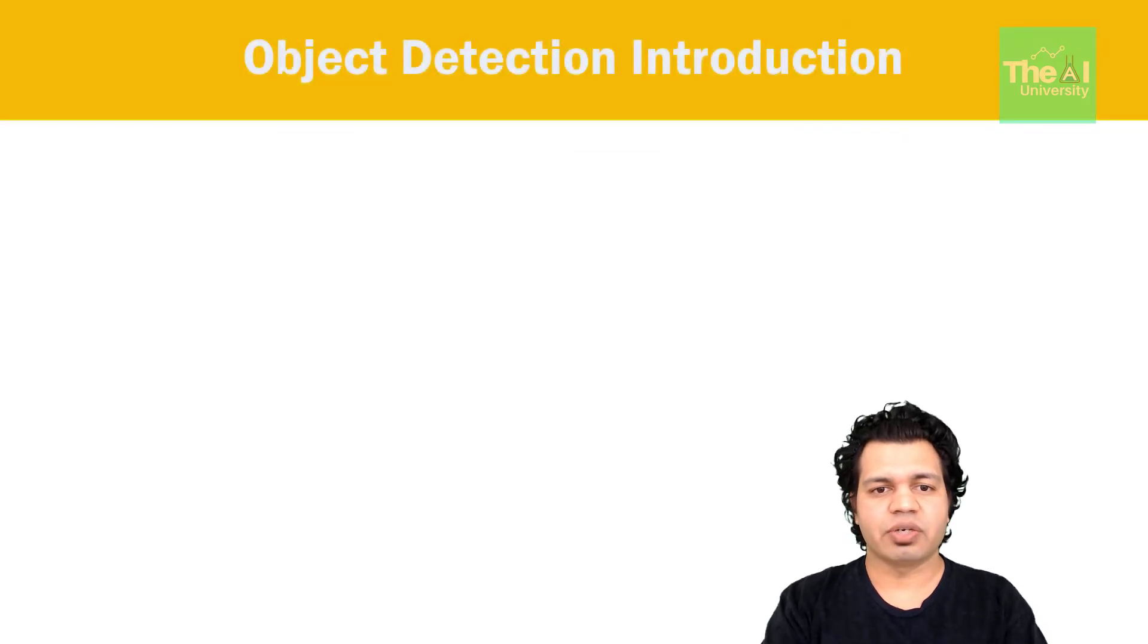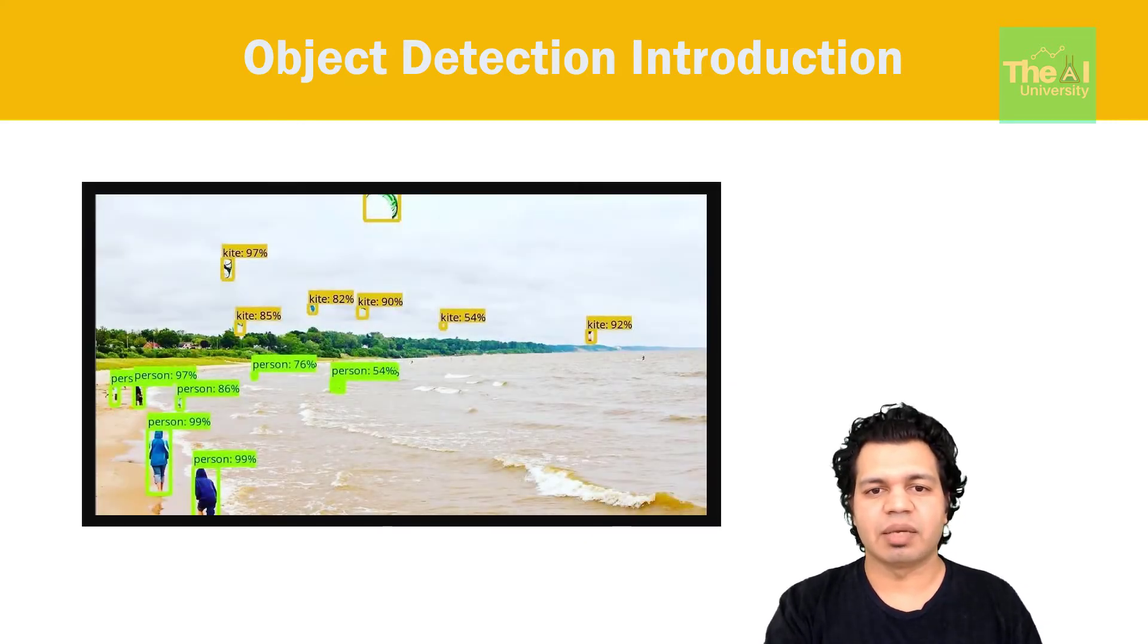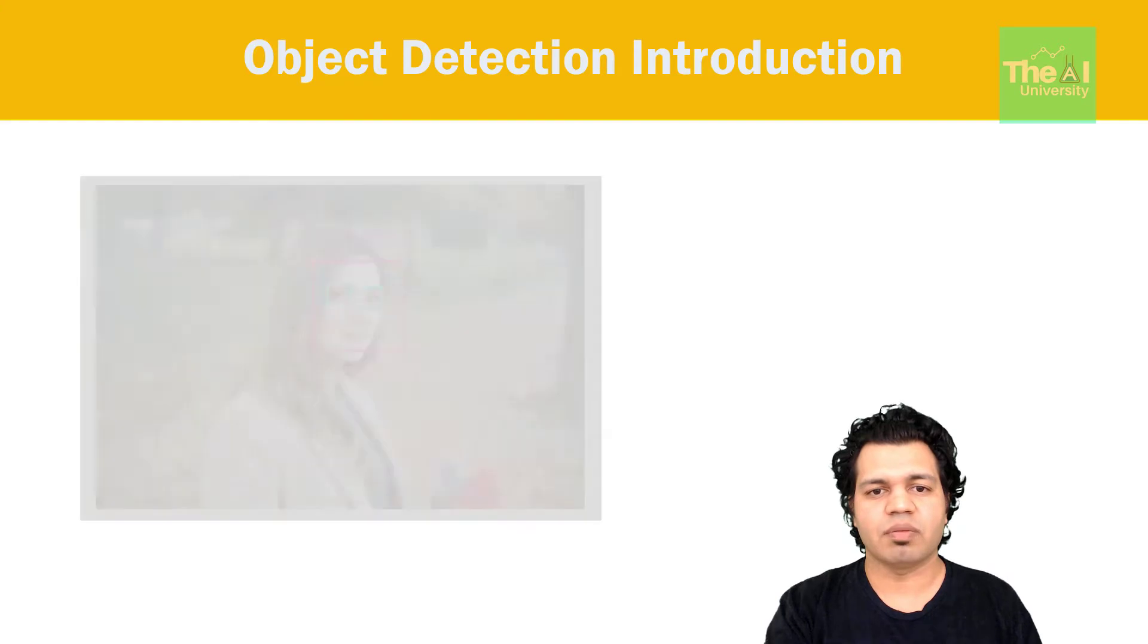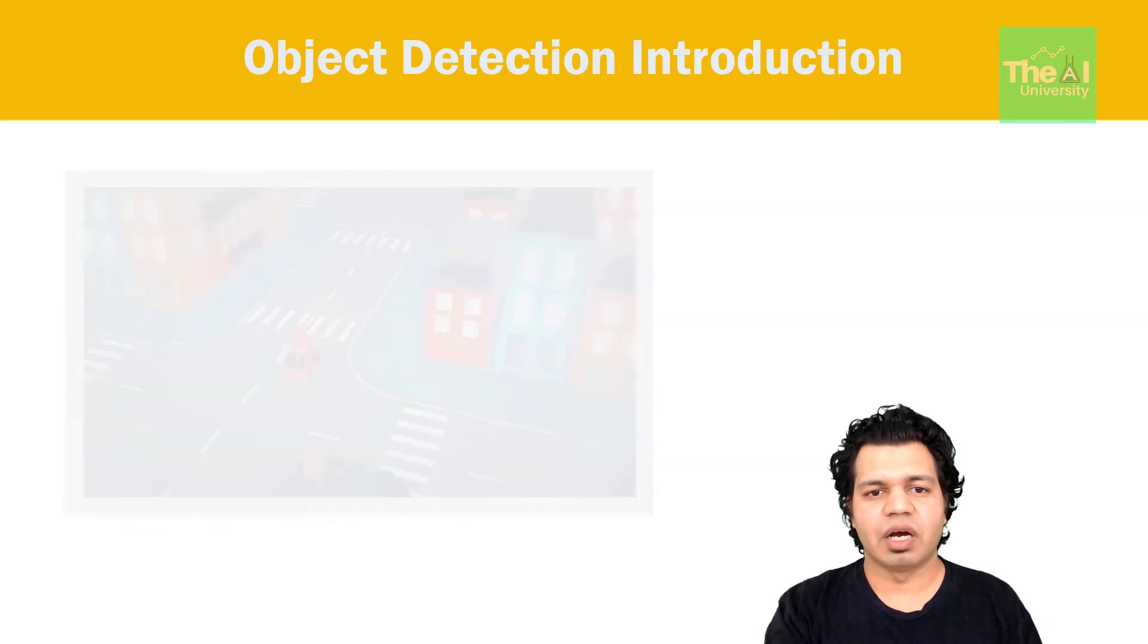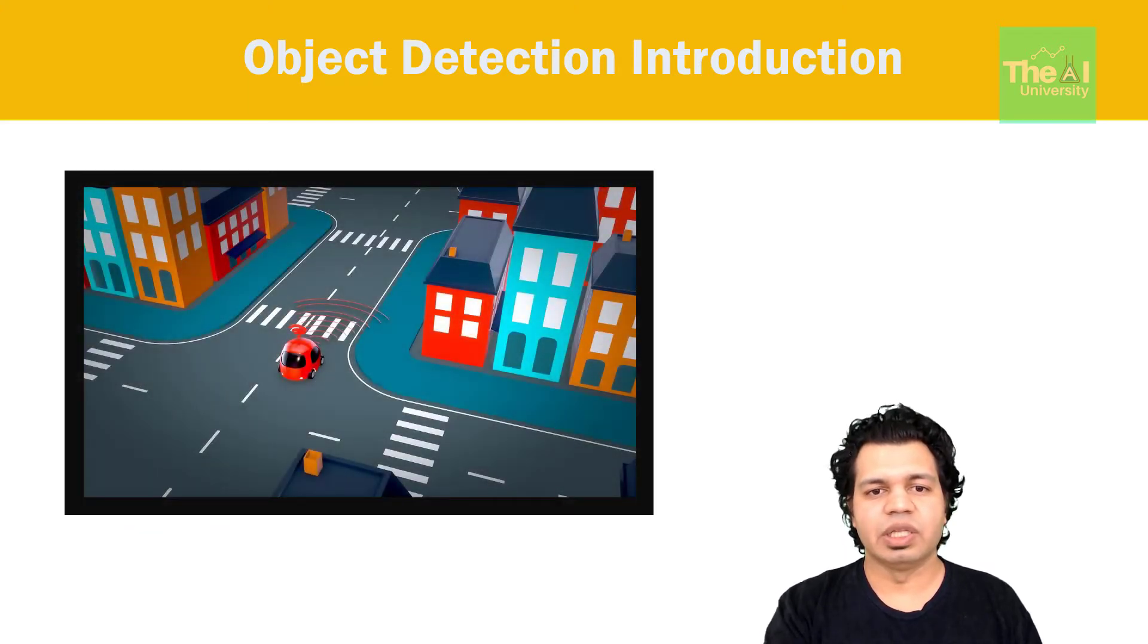Object detection and object recognition are some of the common computer vision problems which deal with identifying and locating objects of certain classes in the image. Whether you want to label the object in the given image, do facial recognition, body movement recognition, handwriting recognition, or even self-driving cars, you definitely will need to understand this concept quite well.